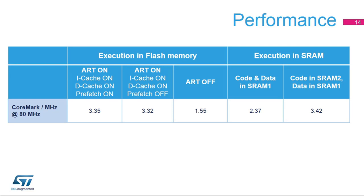Here we compare code execution performance at 80 MHz while running the EEMBC CoreMark benchmark. The maximum performance is reached when the code is executed in SRAM2 with data located in SRAM1. It is also possible to reach maximum performance with code in SRAM1 and data in SRAM2 if the SRAM1 is remapped at address 0. When executing from flash memory at 80 MHz, the maximum CoreMark performance is reached when the ART accelerator is enabled, with almost no loss of performance due to the flash access time requiring four wait states at 80 MHz. Enabling the pre-fetch buffer yields a slightly higher score of 3.3 CoreMark per MHz.